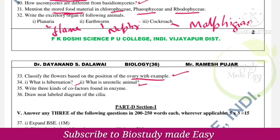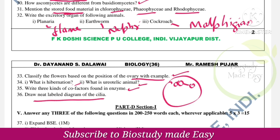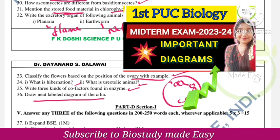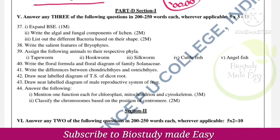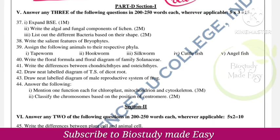Three kinds of cofactors found in enzymes — very very important from the biomolecules chapter. Draw a neat labelled diagram of centriole structure — from the cell: the unit of life chapter. Part D, 5-mark questions: expand BSE — biological classification chapter — bovine spongiform encephalopathy, also known as mad cow disease.